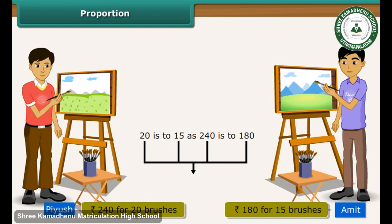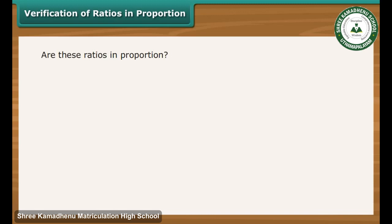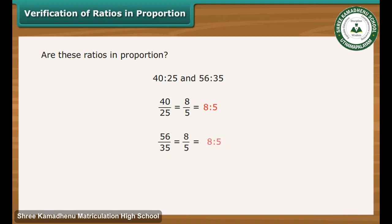Each number used in a proportion is called a term. The first and last terms are called the extreme terms, and the second and third terms are called the middle terms. To verify ratios in proportion, consider 40 is to 25 and 56 is to 35. 40 by 25 reduces to 8 by 5, and 56 by 35 also reduces to 8 by 5. Therefore, 40 is to 25 equals 56 is to 35 — the ratios are in proportion.